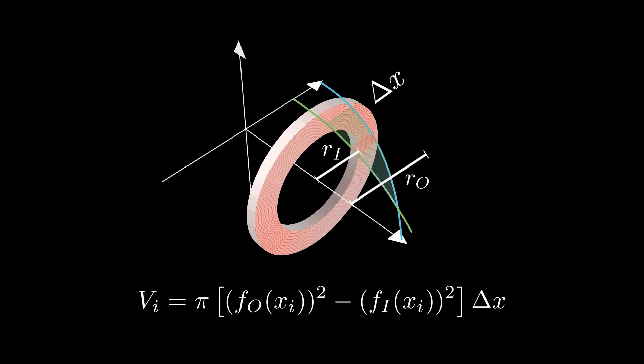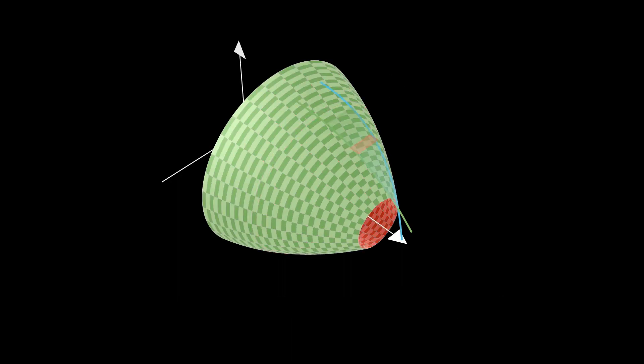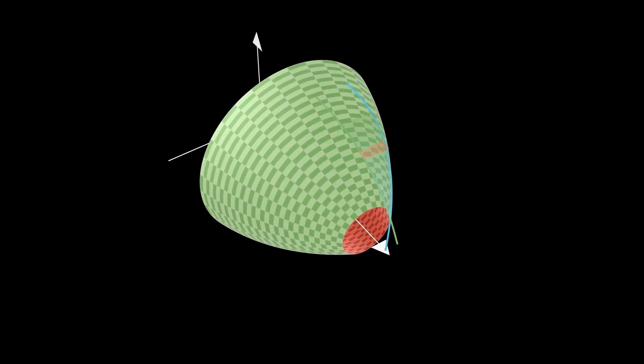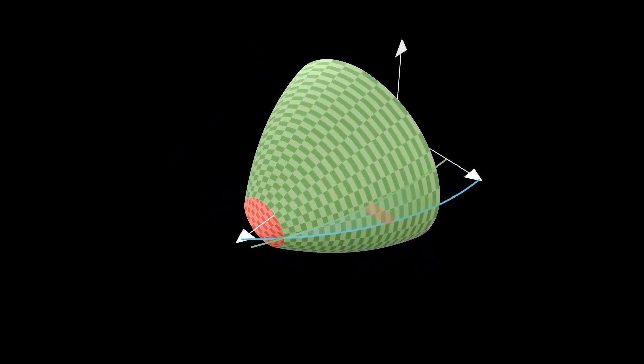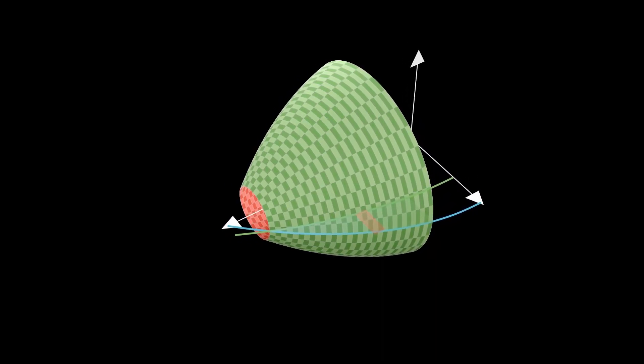Adding up all the approximating volumes and taking the limit as the number of washers approach infinity, we have our expression for the volume of a solid of revolution using washers.